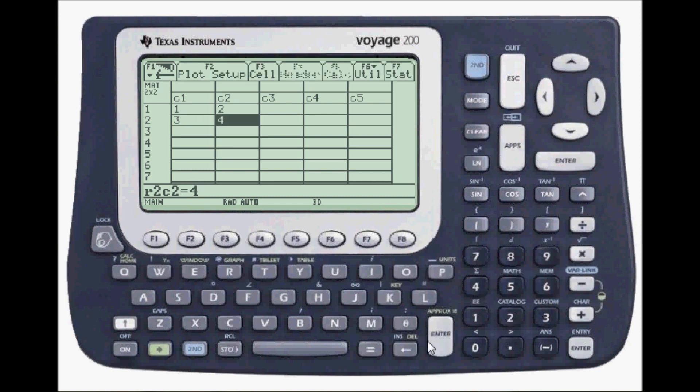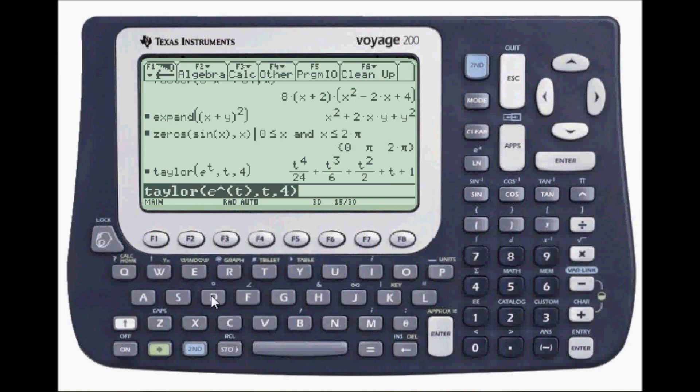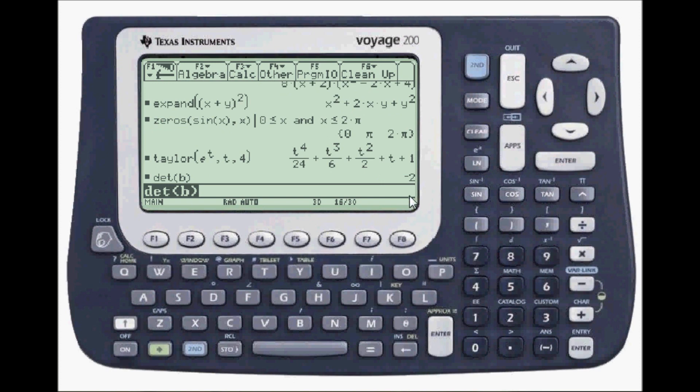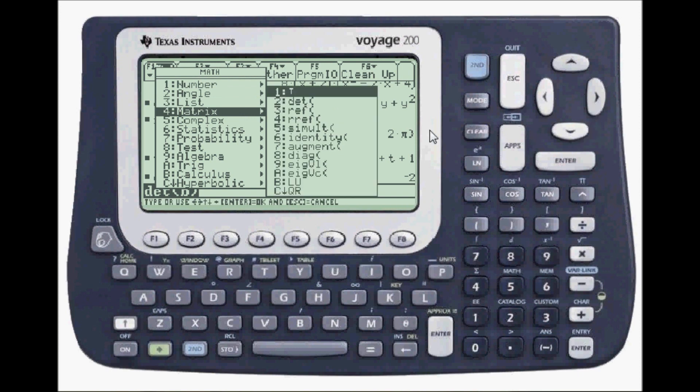And go back to the home screen. Now I can manipulate this matrix that it's made, so I'll take the determinant by pressing DET for determinant, my matrix B, press enter and the answer is negative 2. If I wanted to do some other manipulation to this matrix I can go to the math menu which is over 5, scroll down to matrix and here's a whole bunch of choices, the transpose, reduced row echelon form, eigenvalues, etc.